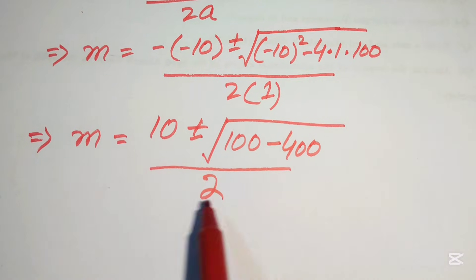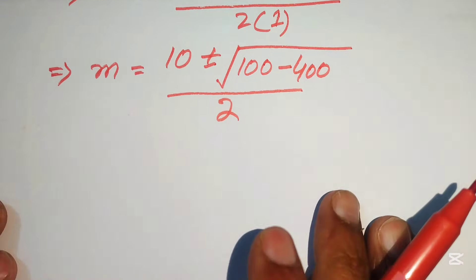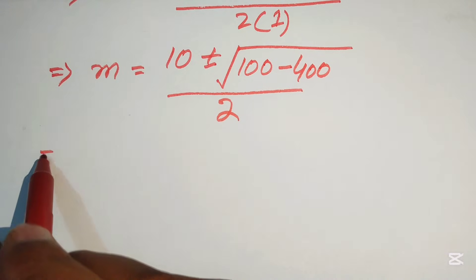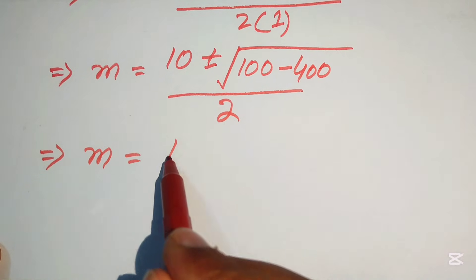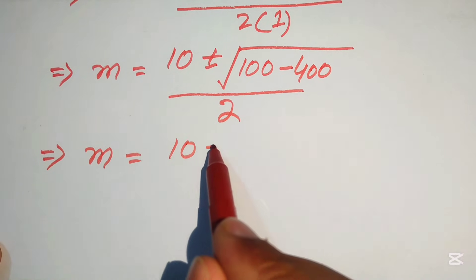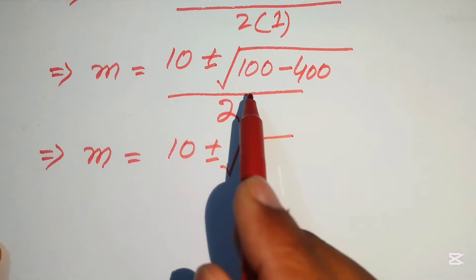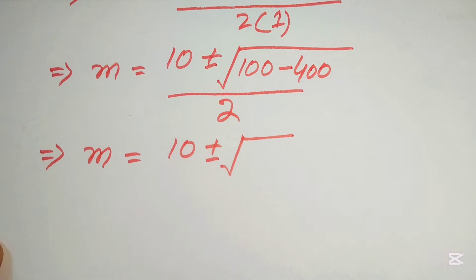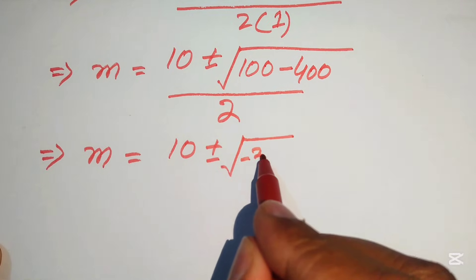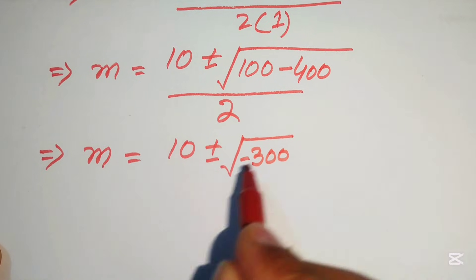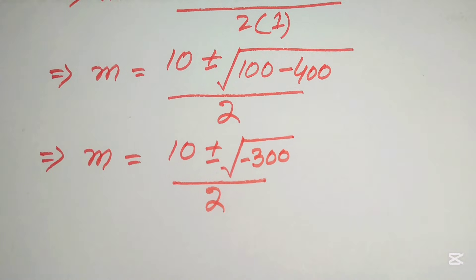We write m equals 10 plus or minus the square root of 100 minus 400, which equals minus 300, divided by 2.